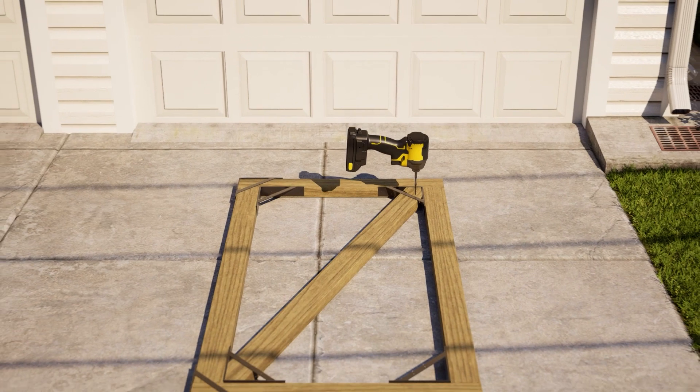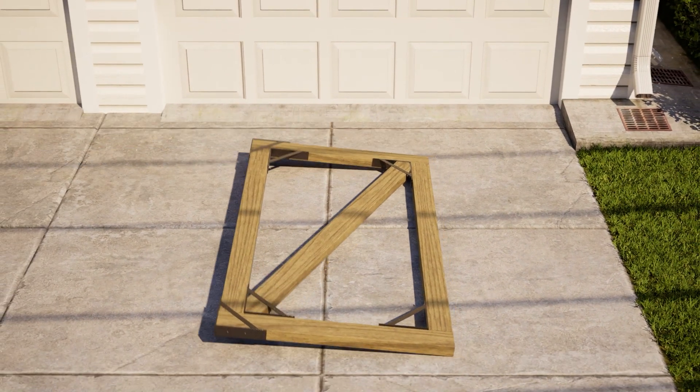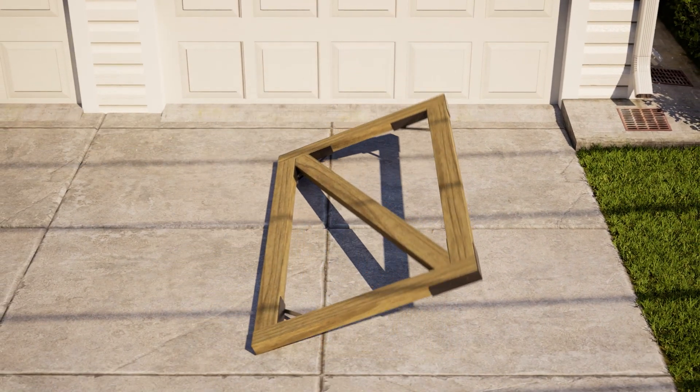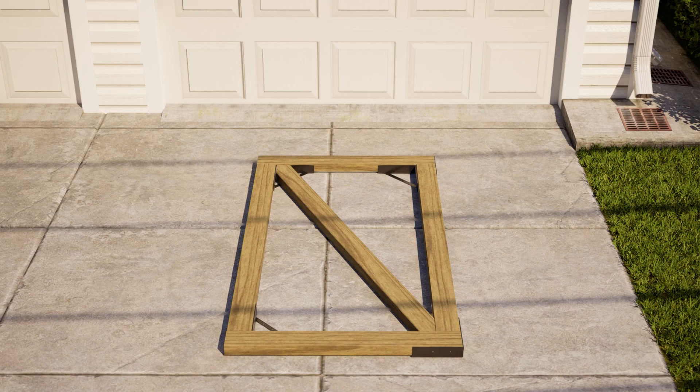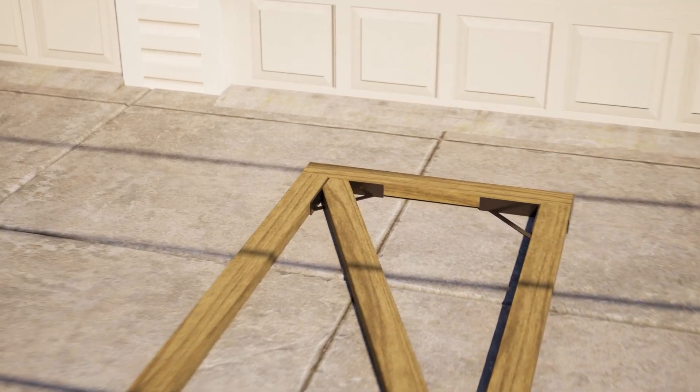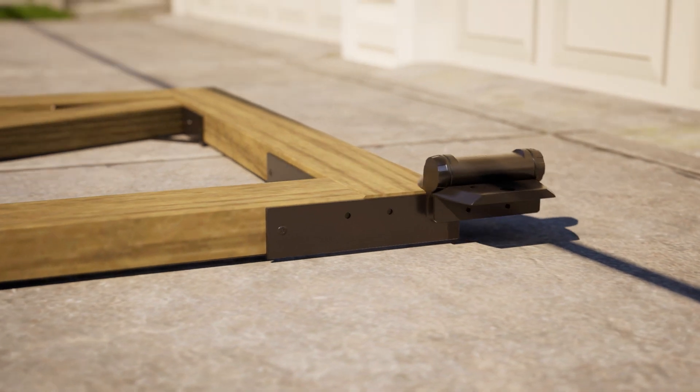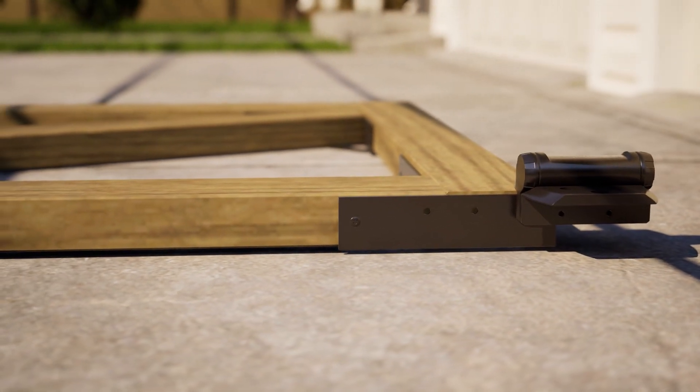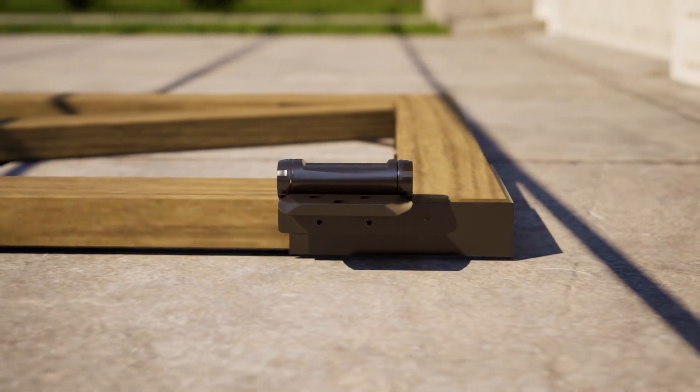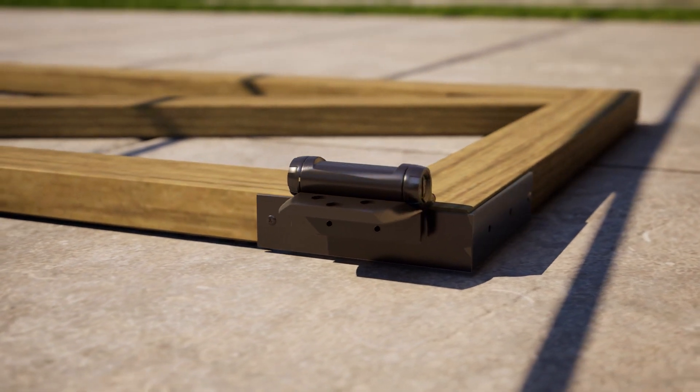Before fastening the hinges to the frame, flip the frame back over so all of the gussets on the angle brackets are positioned down on the flat surface. Position the hinges on top of the outside brackets so that the inside flange holes of the hinge meet the two remaining screw holes in the side of the bracket.